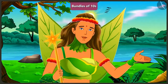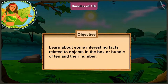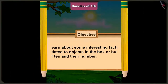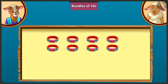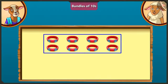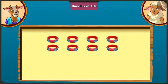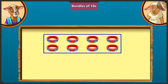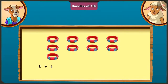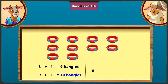Today we will learn about some interesting facts related to objects in the box or bundle of tens and their number. Lily is asked: if there are eight bangles, how many more would need to be added to make ten? Adding one to eight gives nine, and adding one to nine gives ten — so adding two bangles to eight makes ten. Well done, Lily.